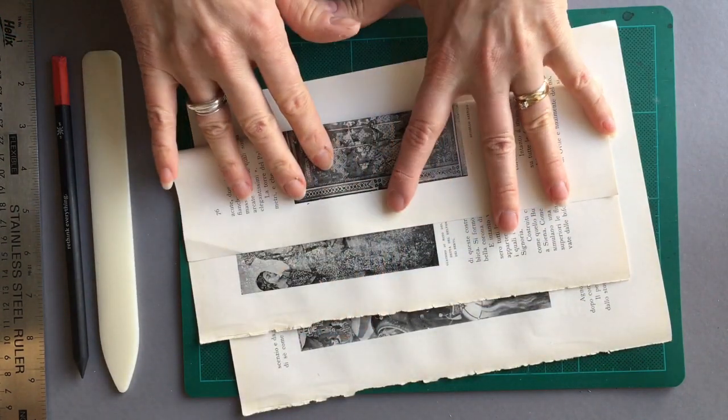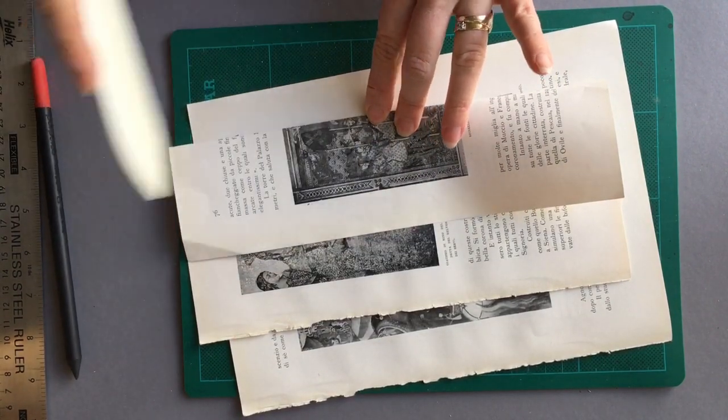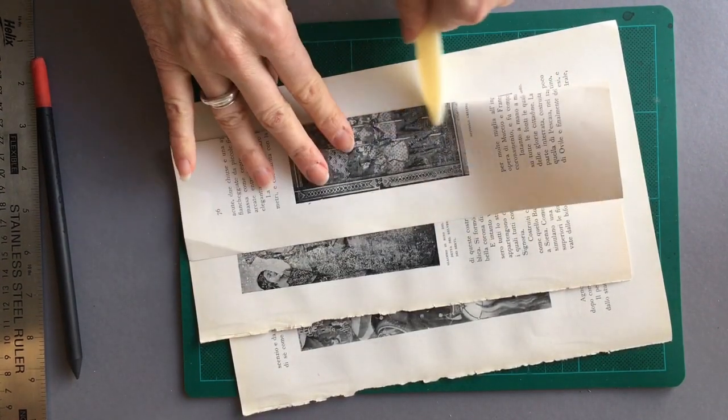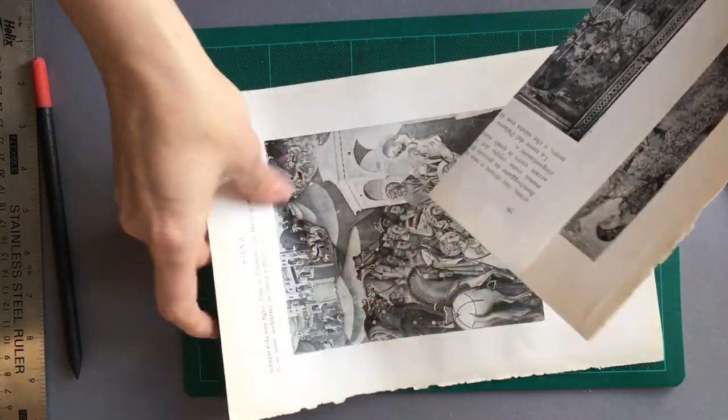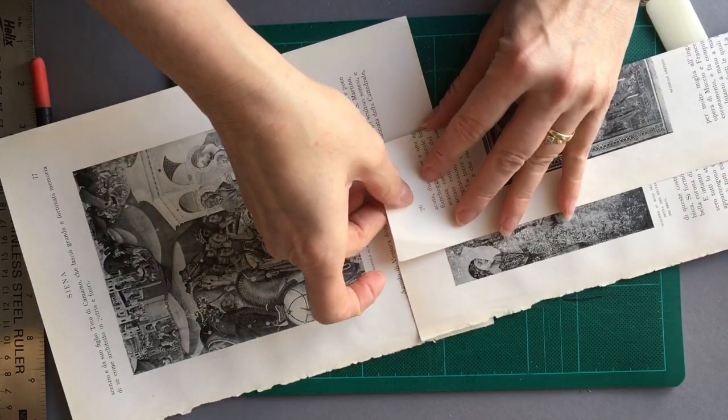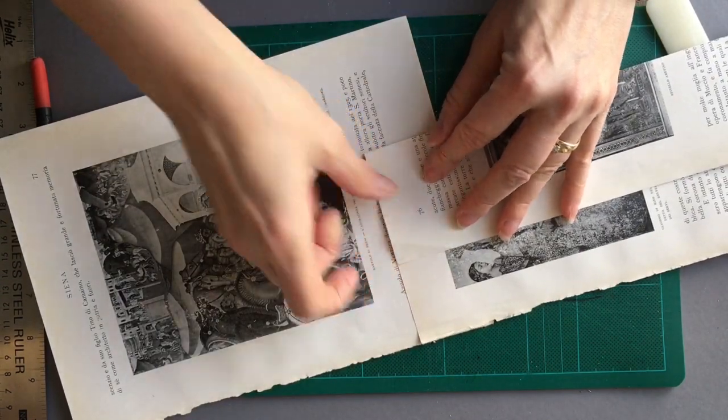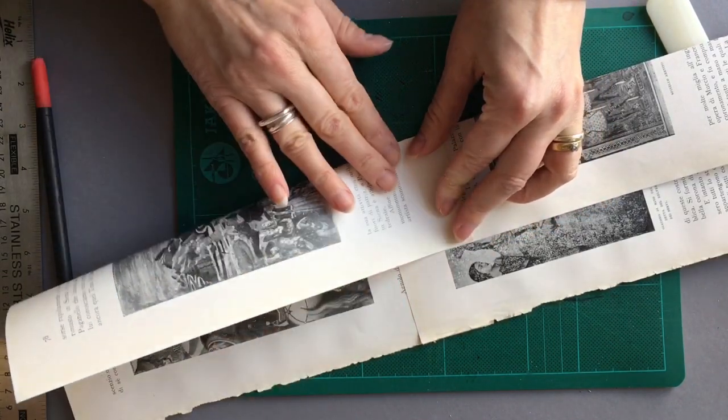Hold in the middle, bone folder inside to outside. Then we need to do exactly the same with the other piece and measure that we're folding in the same place.